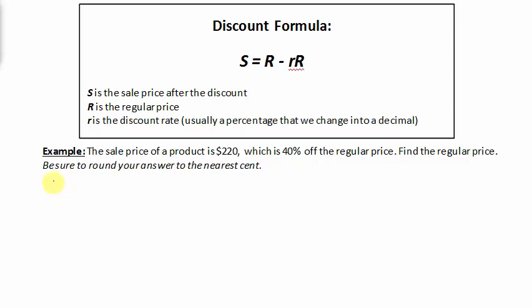So using the formula, the sale price of the product, S, was $220. The regular price of the product, well, that's unknown. That's what we're supposed to find. And r is the rate of the discount, which was given as 40% off, or as a decimal .40.